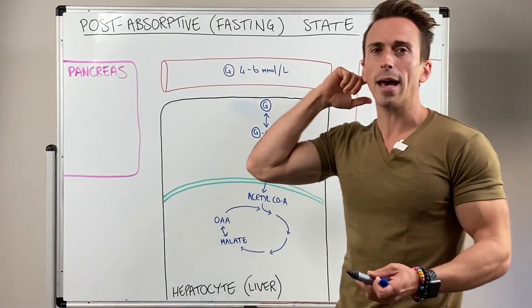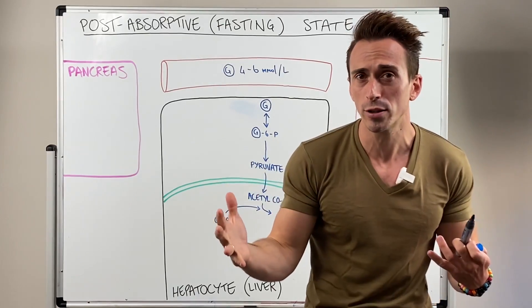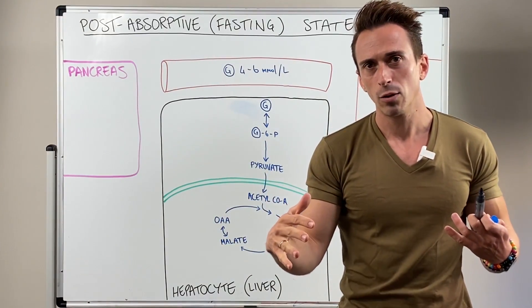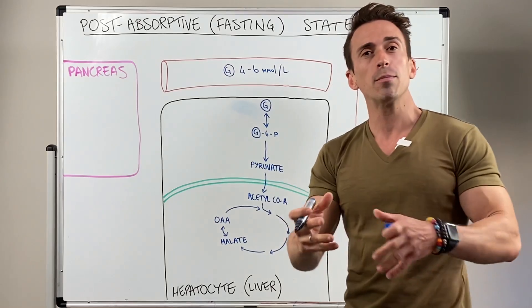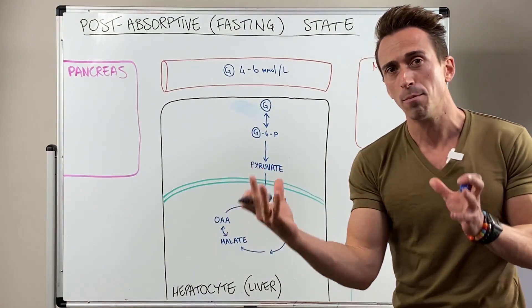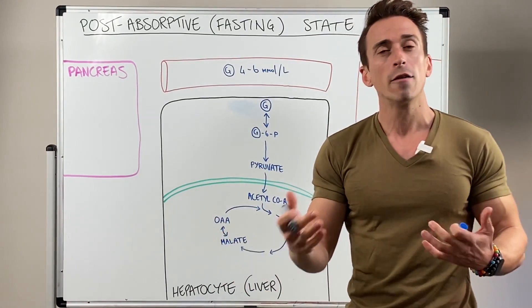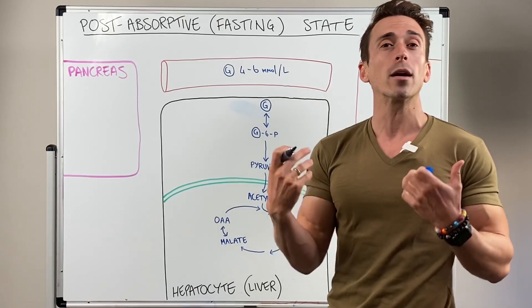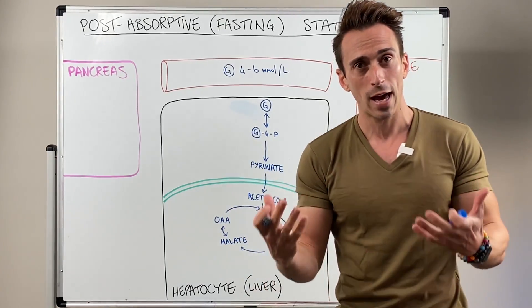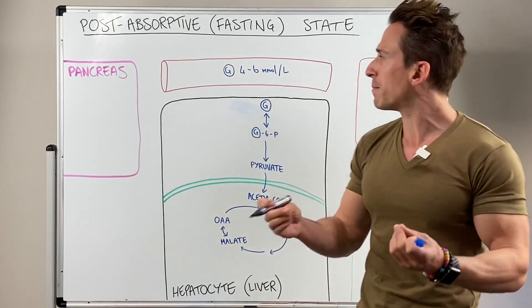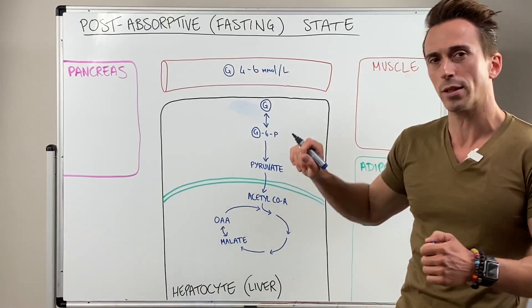What we're going to talk about today is what happens after extended periods of time of not eating — what we call fasting or the post-absorptive state. This can be between meals, so between 4 to 8 hours, or it could even be longer. For example, when we wake up in the morning after not eating for about 10 to 12 hours. What's happening in our body to maintain our blood glucose levels between 4 to 6?